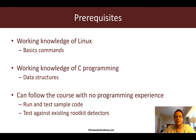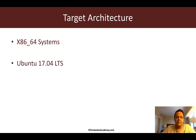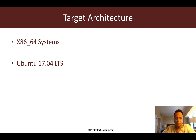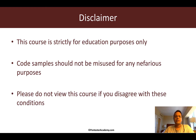The target architecture I'm going to be using is x86 64-bit systems, and Ubuntu 17.04 LTS is going to be the operating system of choice. All the code samples should pretty much work on any Linux x86 64-bit system. We are going to be using the latest version of the kernel and we'll talk about that when we go ahead and set up the lab.